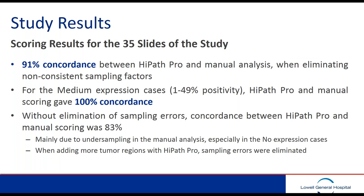This slide summarizes the study results. We were able to determine that for the medium expression cases — those in the 1 to 49% positivity range, which were most concerning to us — there was excellent concordance. We were able to eliminate intra-observer variability, and we were reassured that counting all of the cells on the slide helped eliminate inter-observer variability as well. The caveat, of course, is that the lasso tool is critical in this step.